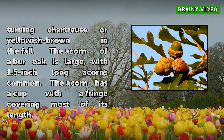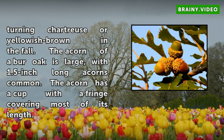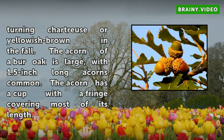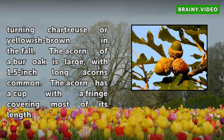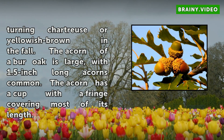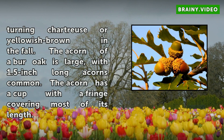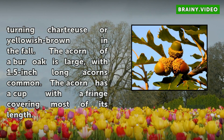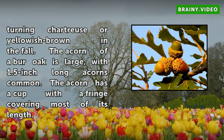The acorn of a bur oak is large, with 1.5 inch long acorns common. The acorn has a cup with a fringe covering most of its length.